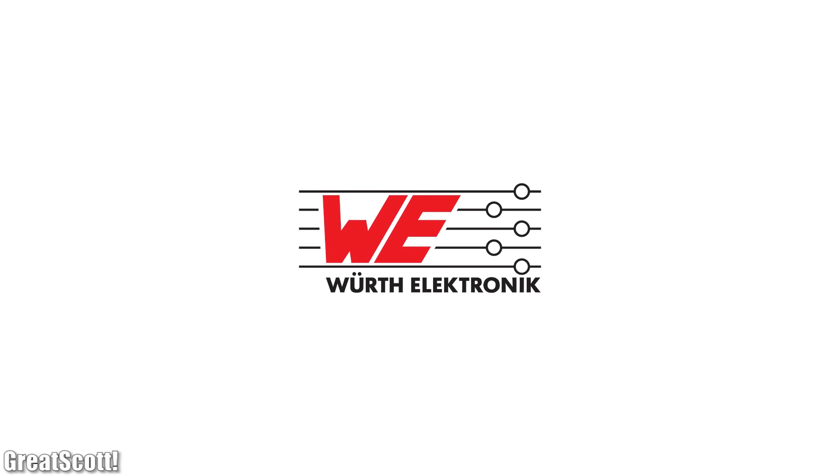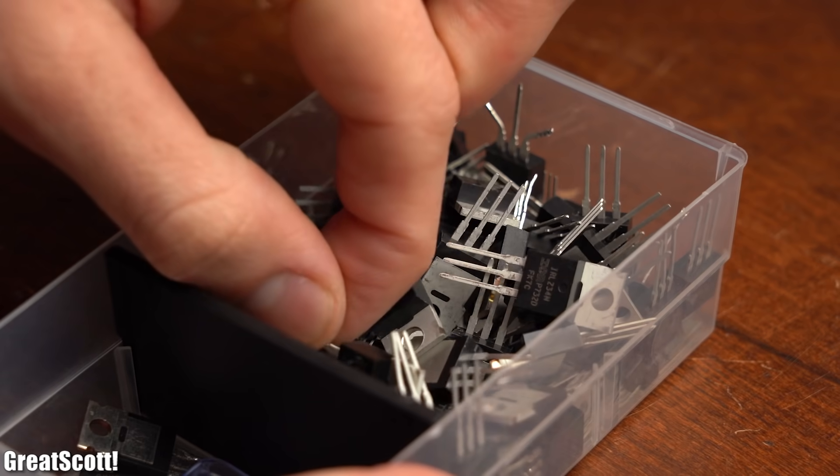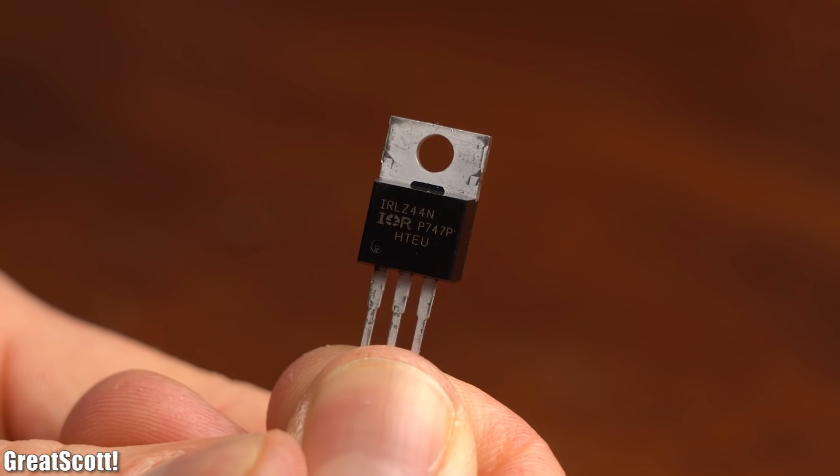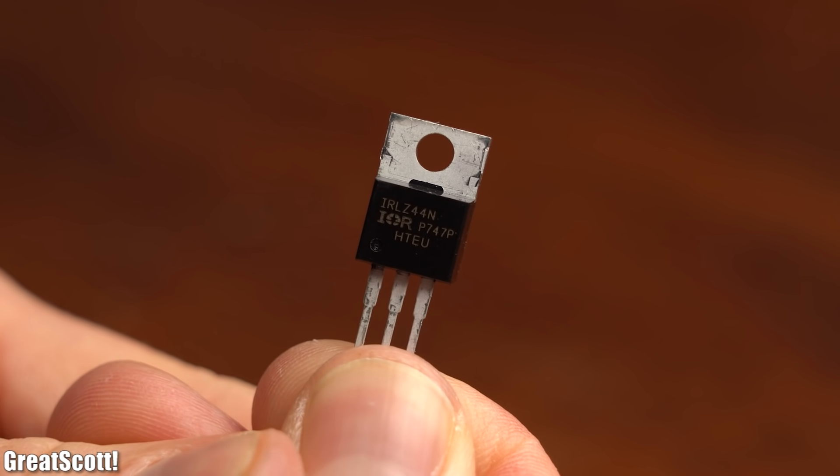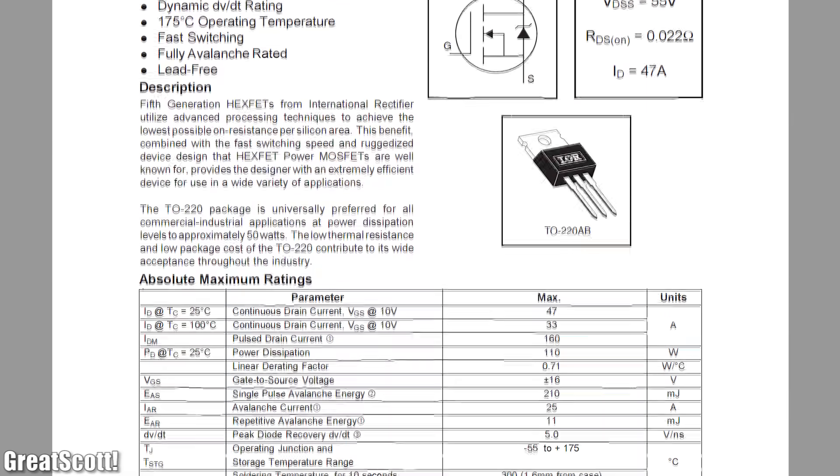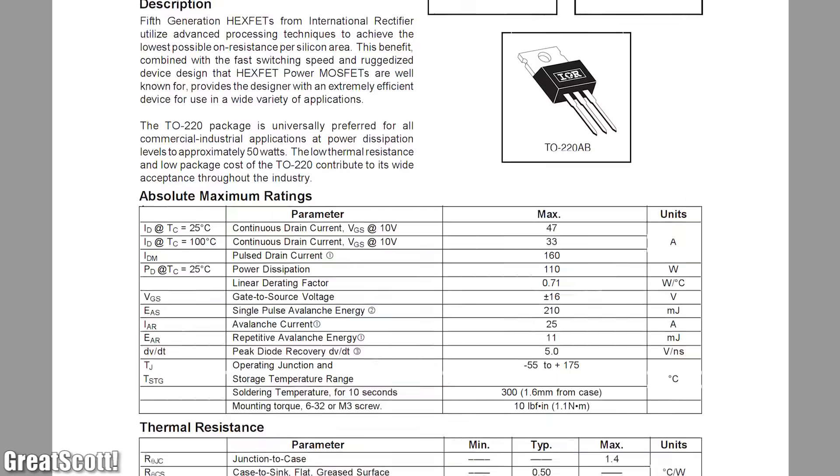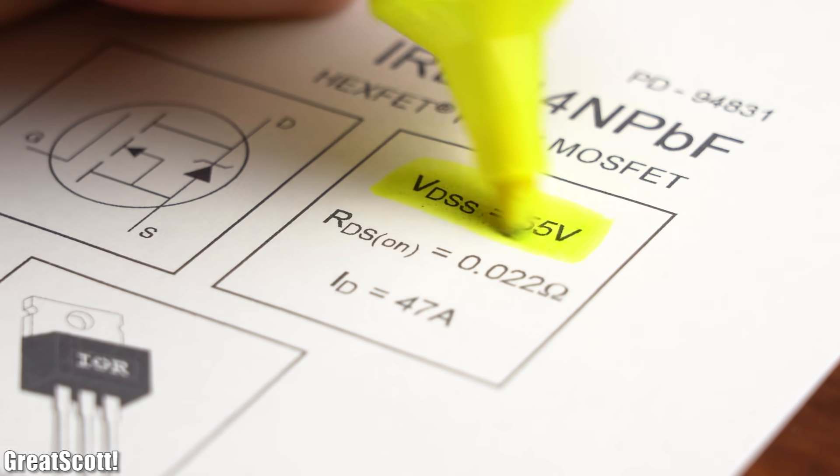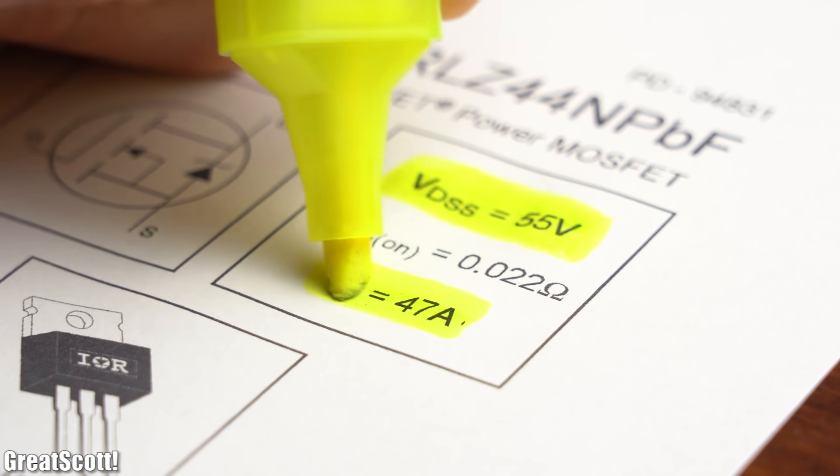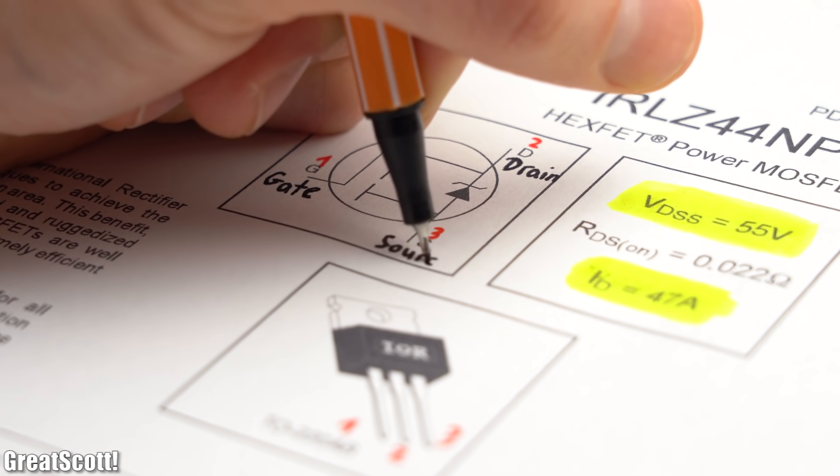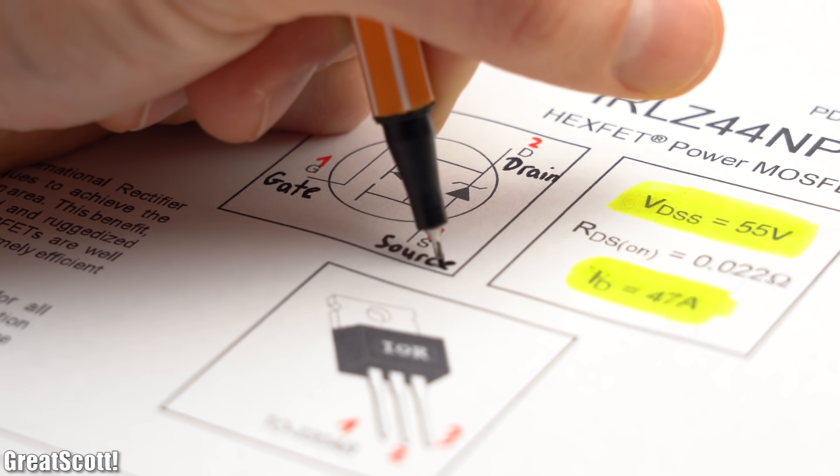This video is sponsored by the WÜRTH ELEKTRONIK eiSos group. First off we need a practical example. For that I chose the IRLZ44N N-channel MOSFET from Infineon. The first place to go for information about this component is of course its datasheet. There we can find out that the MOSFET can handle a maximum of 55V across its drain-source path, it can withstand a maximum of 47A, and it comes with 3 pins which are called gate, drain, and source.